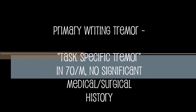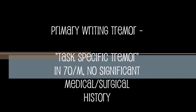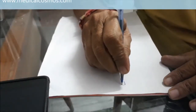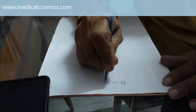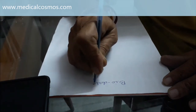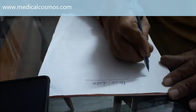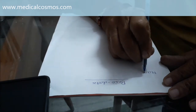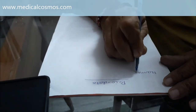Let us discuss today's case. You can see here task-specific tremor, which is a rare form of movement disorder that appears while performing or attempting to perform a particular task. Here you can see that when the patient tried to write, the tremors are very clearly and comprehensively perceived. You can see the handwriting is very shaky and not smooth. Just observe the movements of the patient.